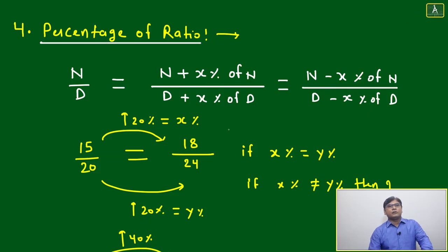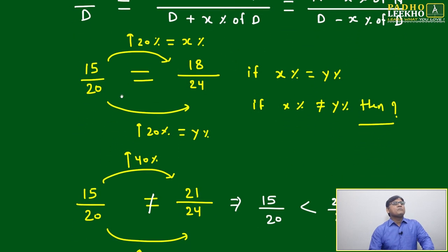It will be equal to N plus x. Already we know either you are increasing, you are adding x percent of N, or you are subtracting x percent of N or D. The ratio will be the same. Now 15 by 20, we have taken one ratio.